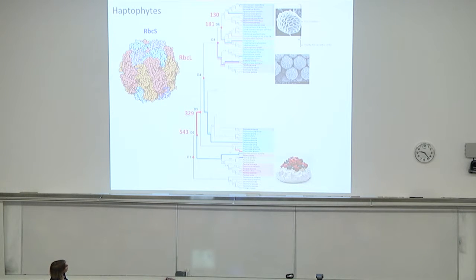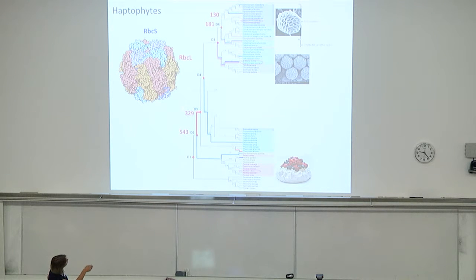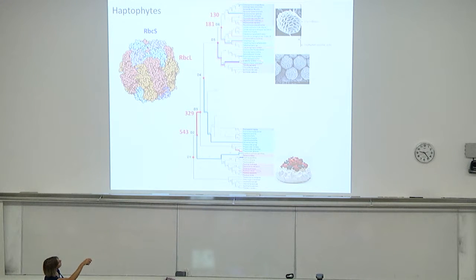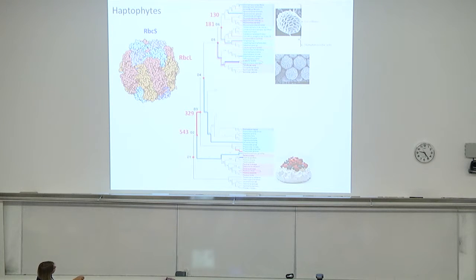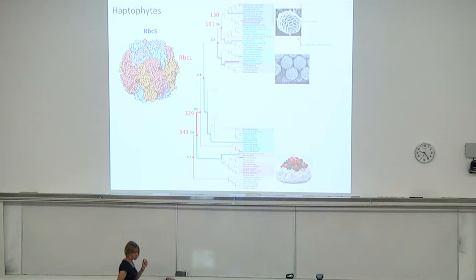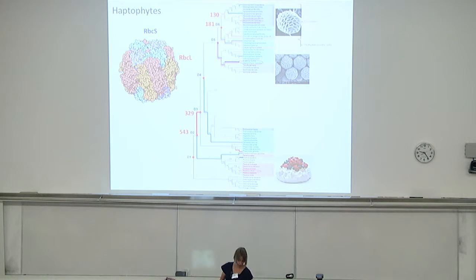Sites under selection are highlighted in light blue, and branches under positive selection are highlighted in bright red. There's a major positive selection event between the pavlovales and the primnesiales, and then a very strong positive selection event coming up towards Emiliani huxleyi and Gephyrocapsa oceanica. The different color indicates this is in the small subunit of rubisco, and the other event is in the large subunit. There are other subtle adaptive changes, but they're not as statistically significant as these major ones.